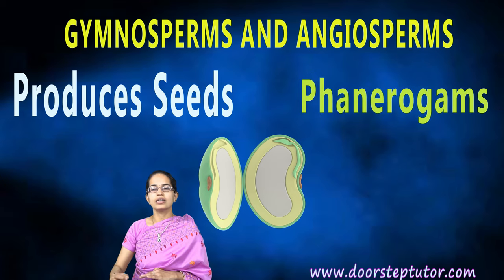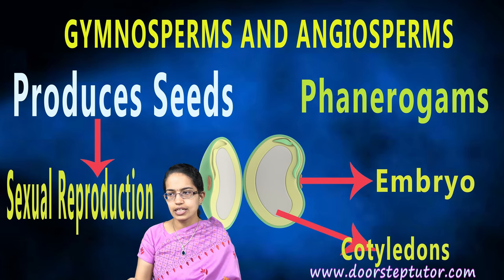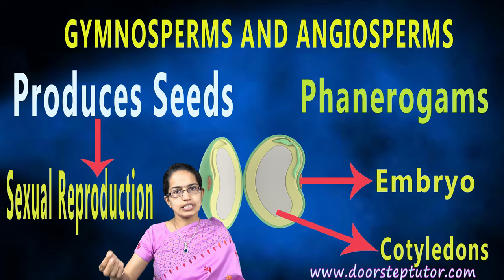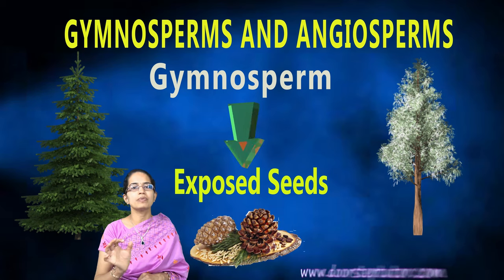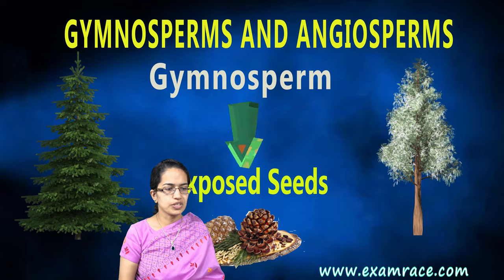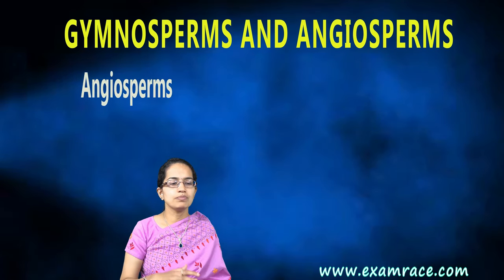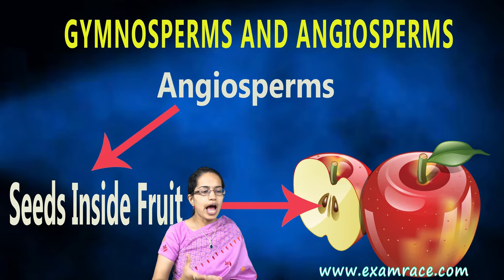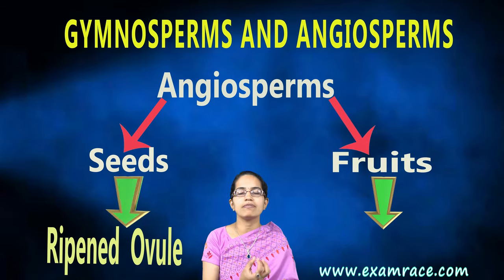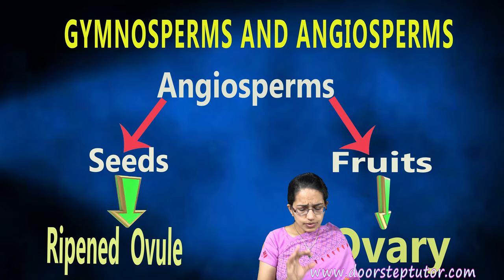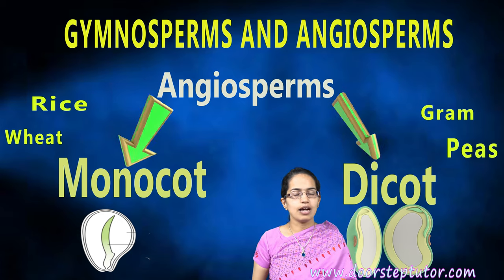Seed production occurs through sexual reproduction; there is an embryo that stores nutrients and helps in initial growth. With cotyledons or seed leaves, a new seed germinates. Gymnosperms, as the name suggests, have naked seeds — 'gymno' means naked, 'sperm' means seed. These are exposed seeds on the surface, usually seen in evergreen perennial woody plants. Pine and Deodar are good examples. Angiosperms, where 'angio' means covered, have seeds inside fruits. Seeds are formed from ovules and fruits from the ovary. Angiosperms are further classified as monocots and dicots; dicots have two cotyledons, with pea and gram as good examples.